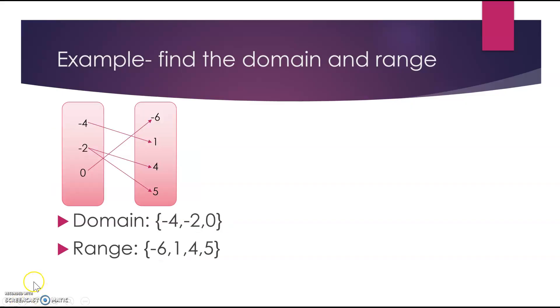All right, if you remember, this is called a mapping diagram. For domain and range, this is super easy to look at because these numbers should be listed least to greatest already on the map. If you recall, the left side is my x's, the right side is my y's, and they normally will be labeled. So my domain, negative 4, negative 2, 0. My range, negative 6, 1, 4, and 5.